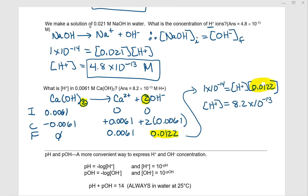You didn't need a full ICE table here — you could simply recognize that [OH⁻] is twice [Ca(OH)₂] and fill it in directly. If something produces more than one hydroxide ion, account for that before plugging into Kw. Next, we'll look at pH and pOH as a more convenient way to express hydrogen and hydroxide ion concentrations.